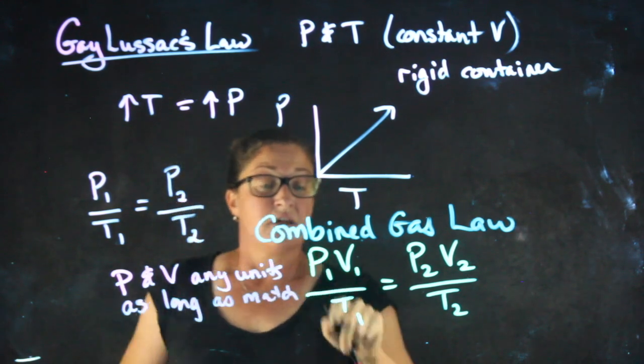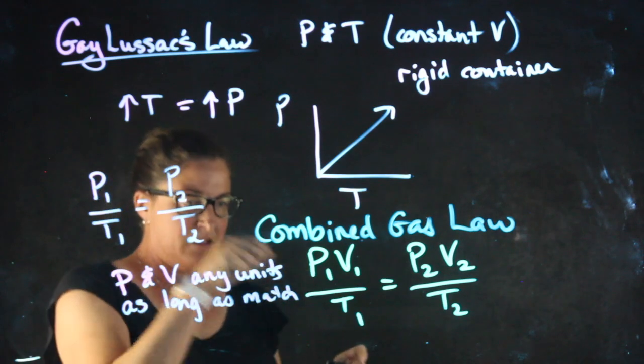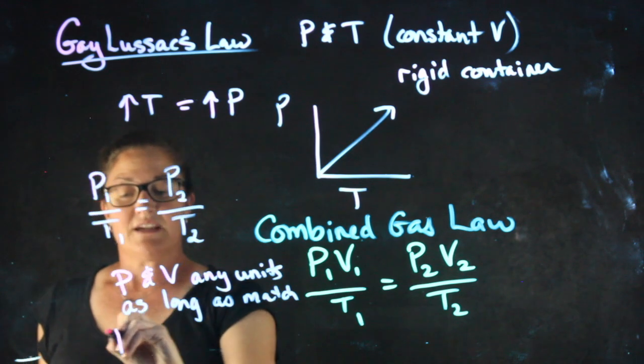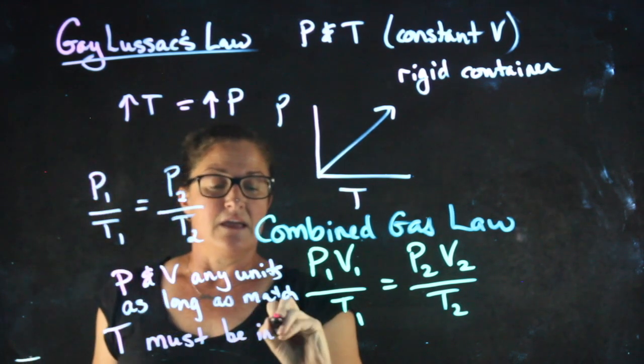In other words, millimeters of mercury here, millimeters of mercury here, or atm here, atm there. Liters, liters, or milliliters, milliliters. But once again, temperature must be in Kelvin.